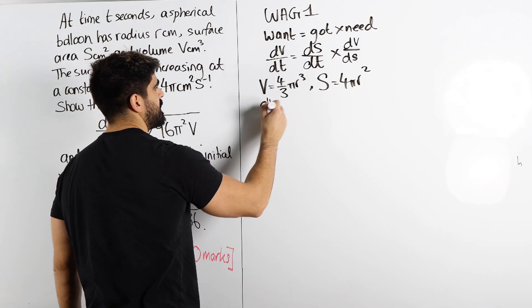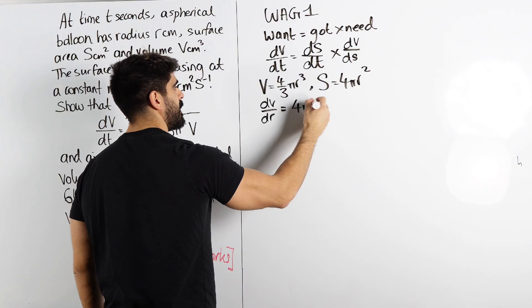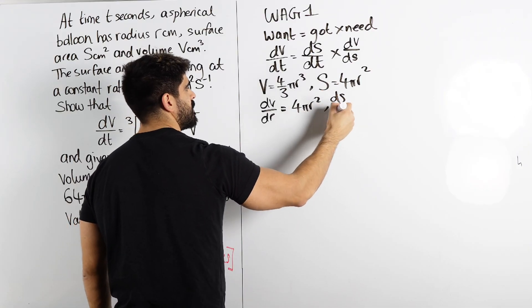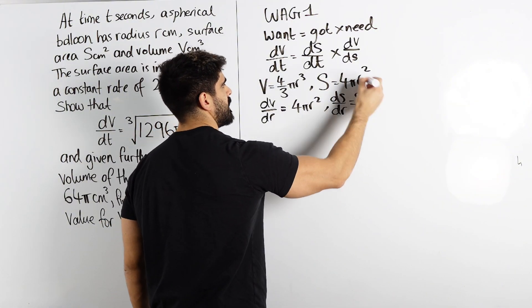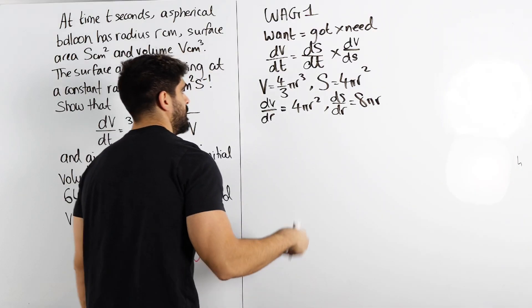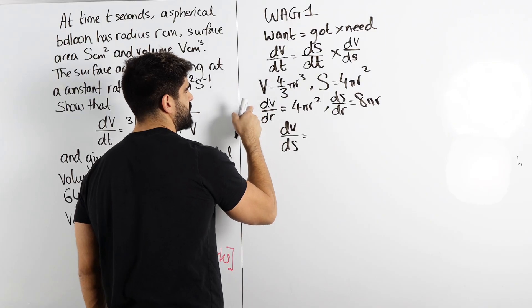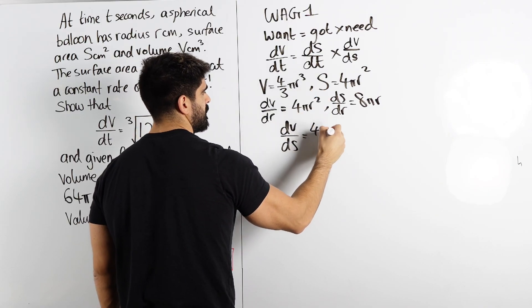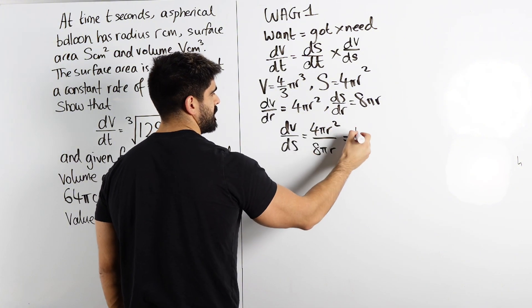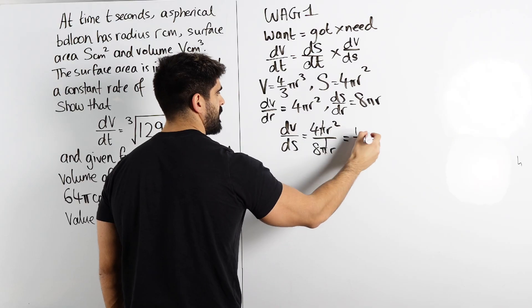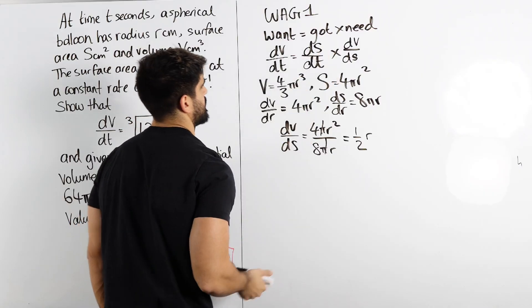So we get dv by dr. Here, we already know what that differentiates to is this: 4π r squared. And then we do ds by dr, which is 8π r. Knock one off, bring down the power, knock one off the power. So dv by ds, we're going to do dv divided by ds. We're left with 4π r squared divided by 8π r. 4 over 8 is 1 half, the π's cancel, and we're left with r, or r over 2.